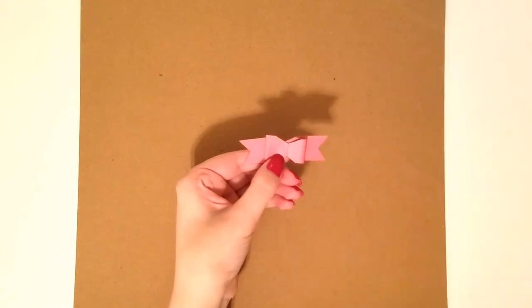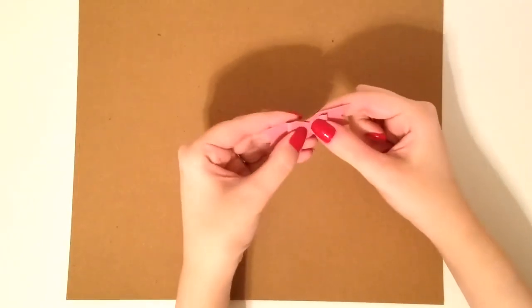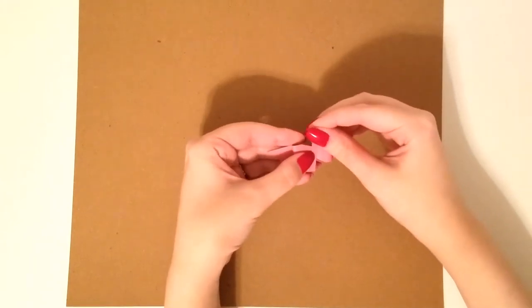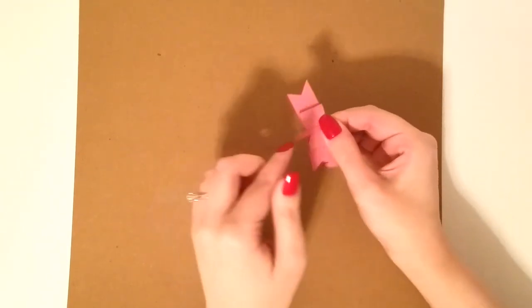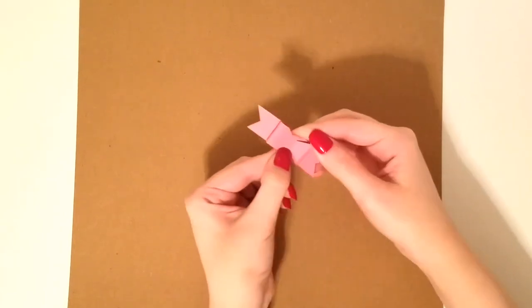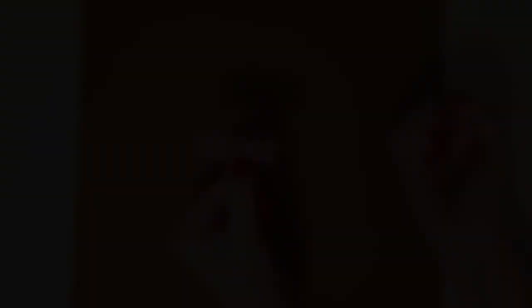And so then on the center I just cut a little tiny strip and I'm just wrapping around the center of the bow that way it just kind of completes it and makes it look finished. You can do this in an alternating color if you choose.